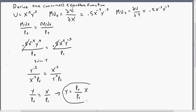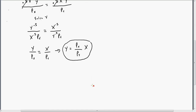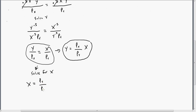So that's our first important expression. Now I'm going to take this same expression and solve it for x. We get x equals the price of good y divided by the price of good x, times y. Both equations are going to be important for us.